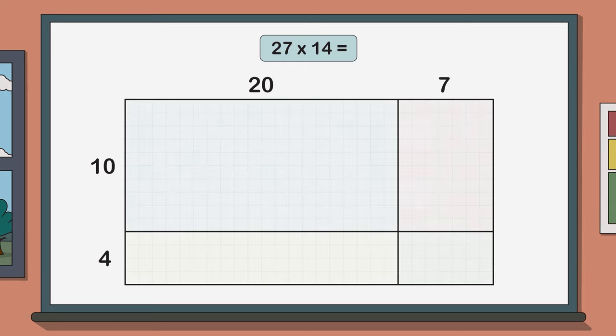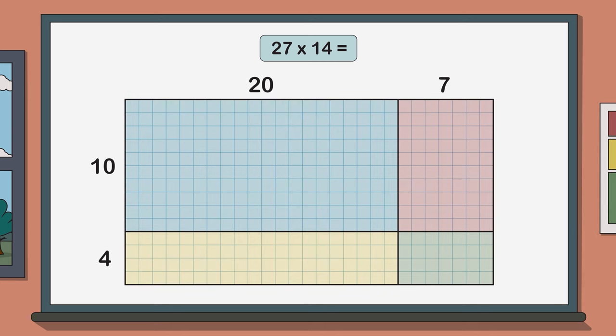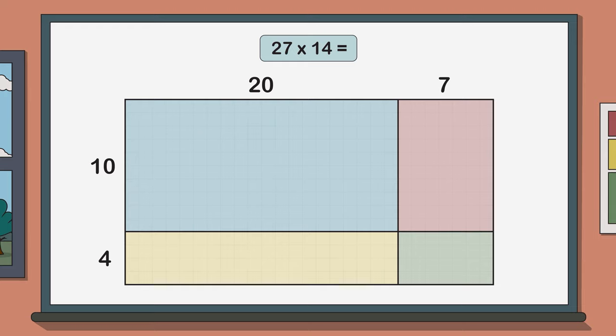We now have 4 smaller rectangular arrays which makes the process of finding the total number of squares much easier. We simply have to multiply the length by the width of each one. Let's start with our biggest rectangle in the top left. It has a length of 20 and a width of 10 and 20 times 10 is 200. Let's write it down in this section.